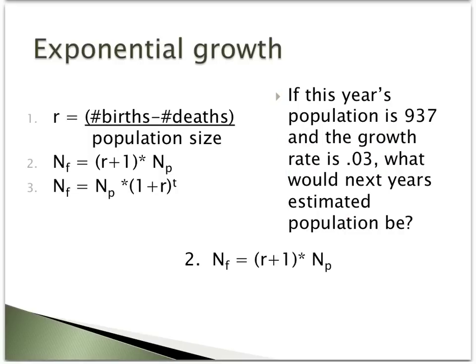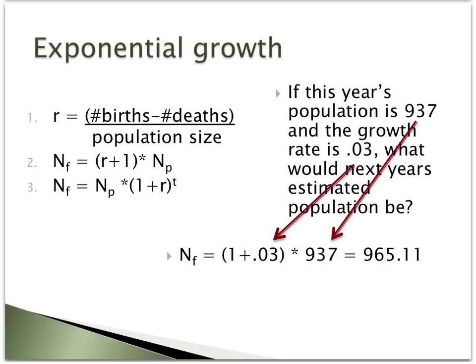Using the second equation, we might try to estimate N_f, or the future population, after one unit of time. If the population in a year is 937 and the growth rate of that population is 0.03, what would next year's estimated population be? To determine the future population, you would take 1 plus 0.03, the growth rate, and multiply it times 937, the current year's population, to get 965.11, the future size of this population.